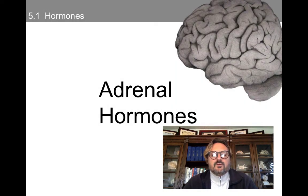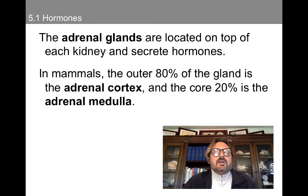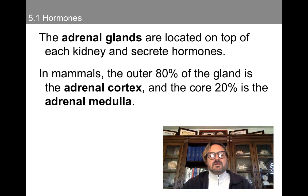First, we're going to talk about adrenal hormones. Corticotropin-releasing hormone triggers the release of adrenocorticotropic hormone from the anterior pituitary, and then adrenocorticotropic hormone travels to the adrenal cortex, where it triggers the release of corticosteroids. The adrenal glands are located on the top of each kidney and secrete hormones. In mammals, the outer 80% of the gland is the adrenal cortex, and the core 20% is the adrenal medulla.